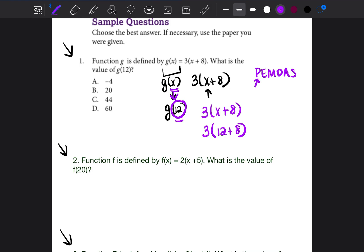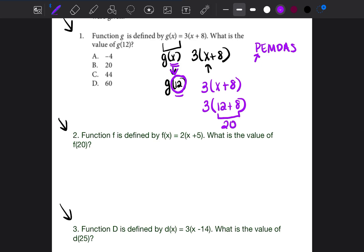If there is an action inside the parentheses, you do the parentheses first. There is an addition, so we do 12 + 8. 12 + 8 equals 20. Then you bring down the parentheses and bring down the 3. So now we have a multiplication sentence, 3 times 20. 3 times 20, that's 60. So when you input the number 12 into this function, you get an output of 60. So the answer is going to be D.